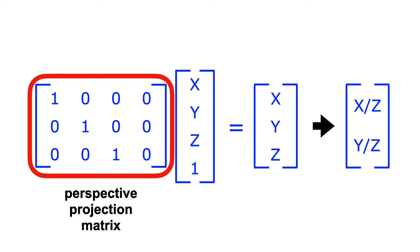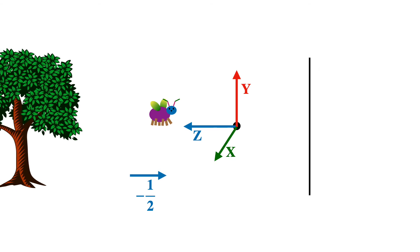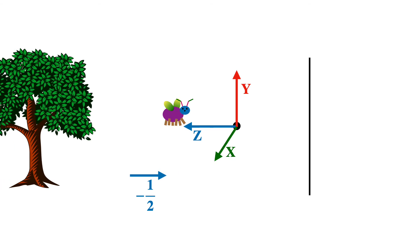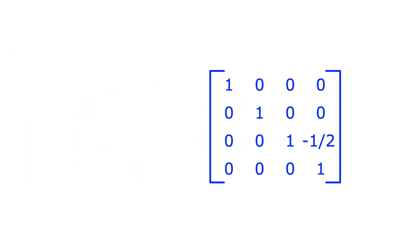The cool thing about representing projections as a matrix is that it's a piece of cake to combine it with other transformations. For example, suppose you want to move your camera forward one half unit. That's equivalent to moving the scene back one half unit. This is a translation in z, which you could write with this matrix transform. And we can combine this translation with our projection matrix by multiplying them together.